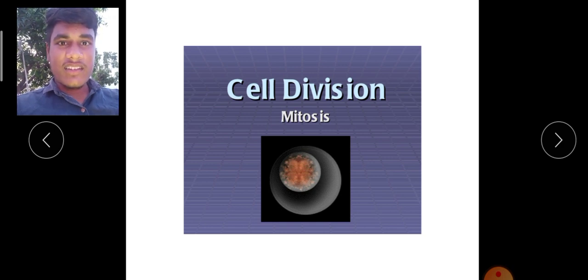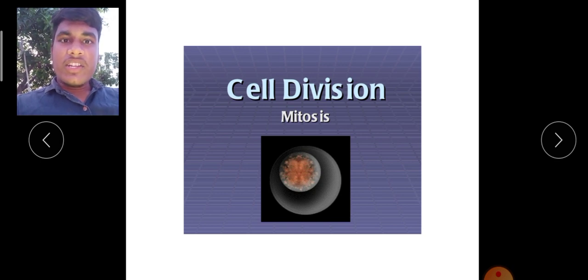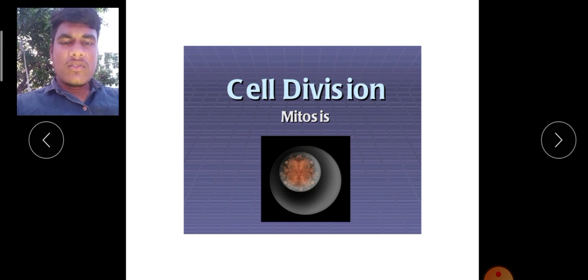What are the living creatures? For example, humans, animals, plants, etc. Cell division is not happening in non-living creatures. So, cell division is taking place in all the living creatures.